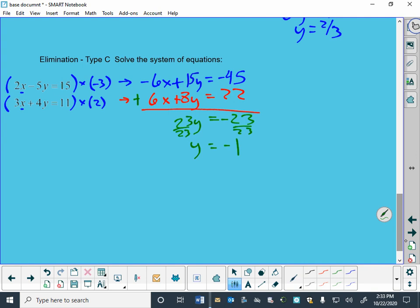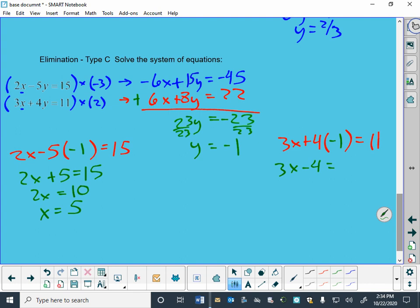And now, I'm going to go back to a safe place like the very beginning. And I've got 2x minus 5 times the y equals 15. We'll try the negative 1 in there. And we'll get 2x plus 5 is equal to 15. So, 2x is 10. And that gives me an x of 5. And just to make sure, 3x plus 4 times the y is equal to 11. And my y was a negative 1. So, 3x minus 4 is equal to 11. And 3x is 15. And x is 5. Those agree. So, I can confidently say that 5 comma negative 1 is the correct answer to that one.